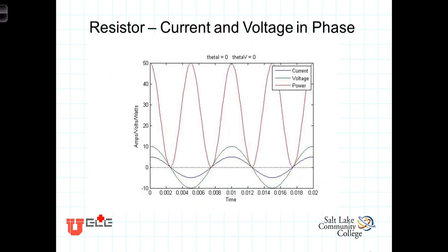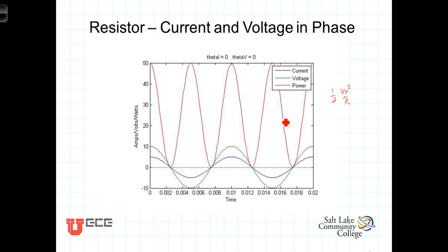We have then this situation: the current and the voltage are synchronized with each other. They're both positive at the same time giving us positive power, and both negative at the same time also giving us positive power. So the power oscillates from a maximum value to zero but remains positive the entire time. The average power is one half Vp squared over R, which equals one half of the power a DC source would deliver to that resistor. If written using the effective voltage, the average power turns out to be Veff squared over R.